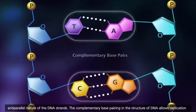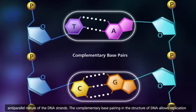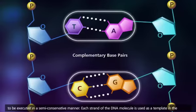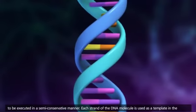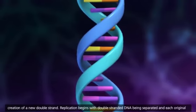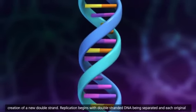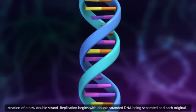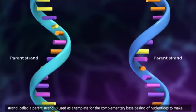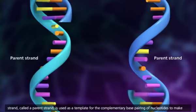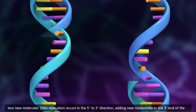The complementary base pairing in the structure of DNA allows replication to be executed in a semi-conservative manner. Each strand of the DNA molecule is used as a template in the creation of a new double strand. Replication begins with double-stranded DNA being separated, and each original strand, called a parent strand, is used as a template for the complementary base pairing of nucleotides to make two new molecules.